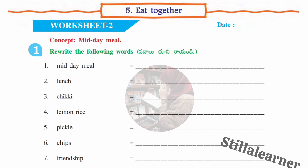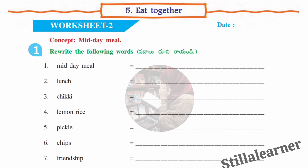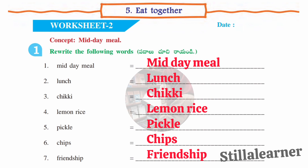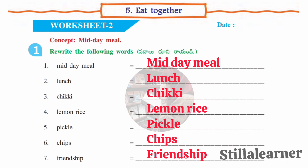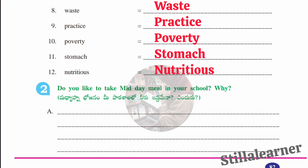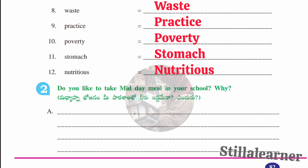In the first section of Worksheet 2, we have some words to rewrite with the first letter as capital. The twelve words from the midday meal concept are: midday meal, lunch, chicky, lemon rice, pickle, chips, friendship, waste, practice, poverty, stomach, and nutritious.